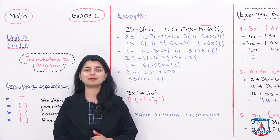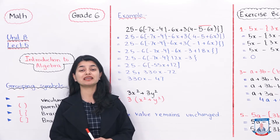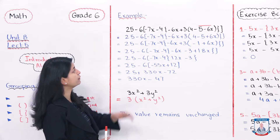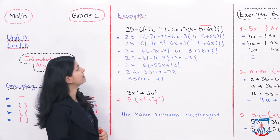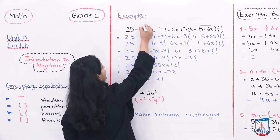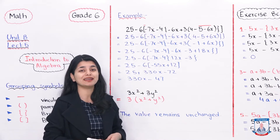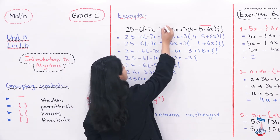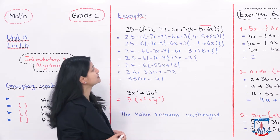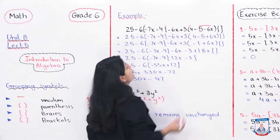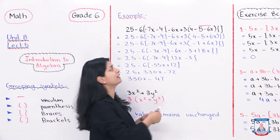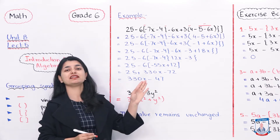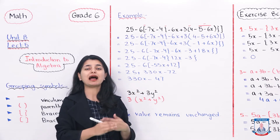This example is in your textbook. I will solve it with you so that you understand how to attempt these questions. We have a question which is: 25 minus square bracket, with parenthesis minus 7x minus 4, then braces minus 6x plus 3, then parenthesis with vinculum over 4 minus 5 minus 6x. So here you have all these portions — vinculum, parentheses, braces, and square brackets — and you have to simplify it.